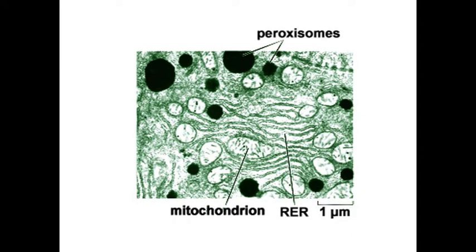They are found both in plants and animals, apart from their existence in protozoa and yeast. The mechanism of biogenesis of peroxisomes is complex and not completely known. The peroxisomes have a lifespan of 5 to 6 days after which they are destroyed through the process of autophagy.